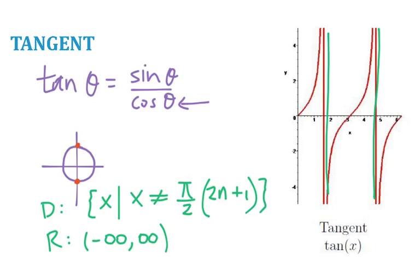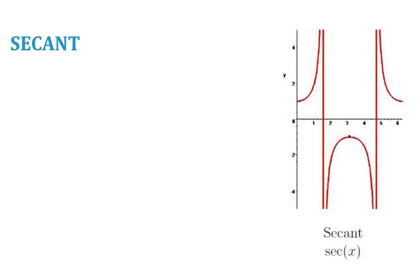The last few I won't talk as long about. Secant is the reciprocal of cosine. So to graph secant it turns out you can actually take the graph of cosine and kind of work with the reciprocal of the pieces. So that's how we generate this graph here.